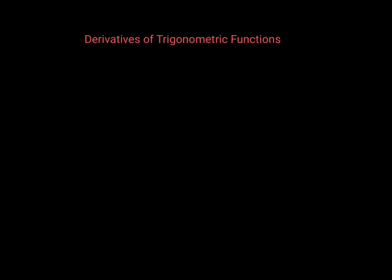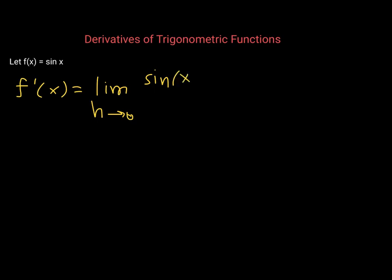In this lesson, we study the derivatives of our six trigonometric functions. Let's start with the derivative of the sine function. If we let f of x equal sine of x, then f prime of x will be equal to the limit — using our limit definition — as h approaches zero of sine of x plus h minus sine of x, all over h.